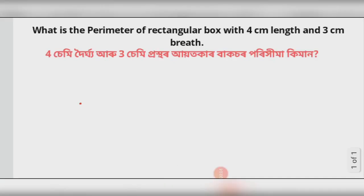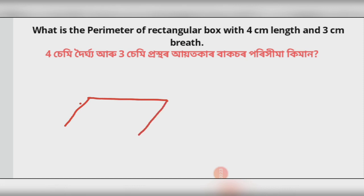What is the perimeter of a rectangular box with 4cm length and 3cm breadth? The options are 30cm, 12cm, and 13cm.